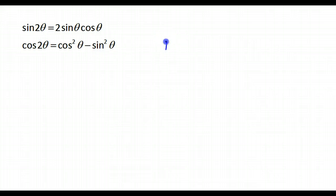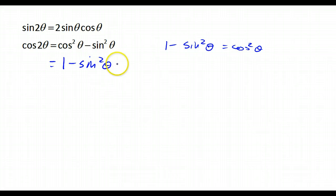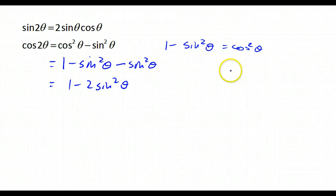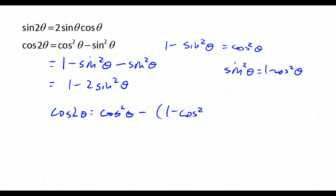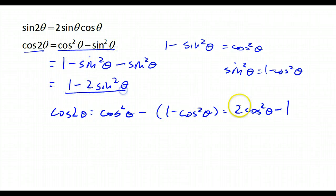If I replace cosine squared with 1 minus sine squared from our Pythagorean identity, this becomes 1 minus sine squared theta minus another sine squared theta, so I get 1 minus 2 sine squared theta. Or if sine squared theta equals 1 minus cosine squared theta, then cosine 2 theta becomes 2 cosine squared theta minus 1. So cosine of 2 theta has 3 different versions, and sine of 2 theta only has 1.